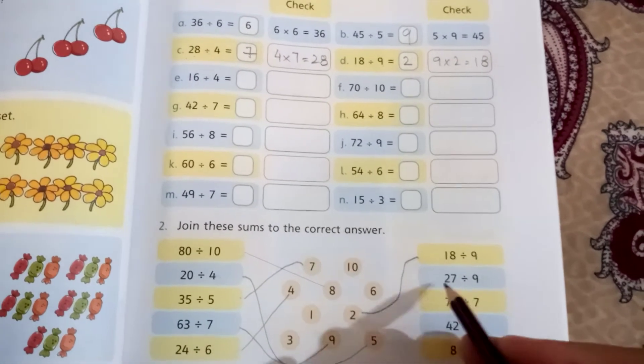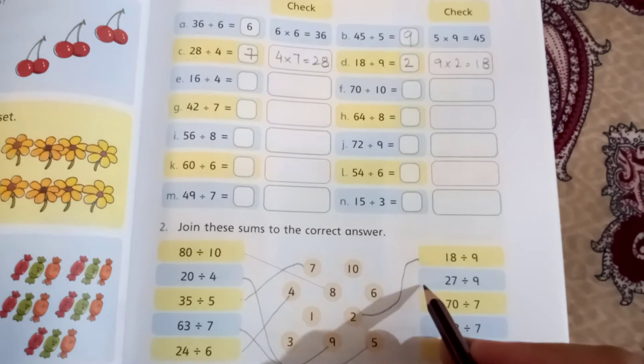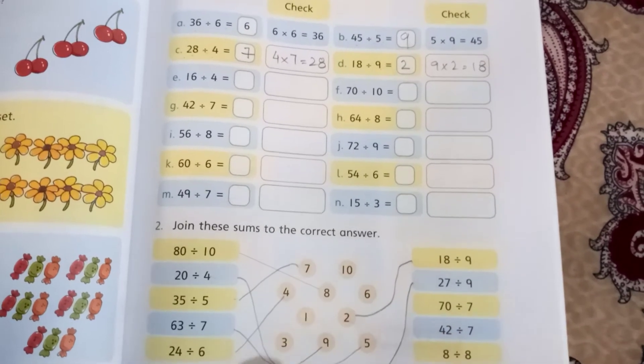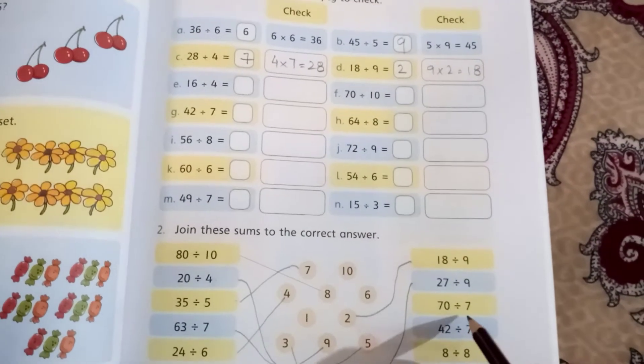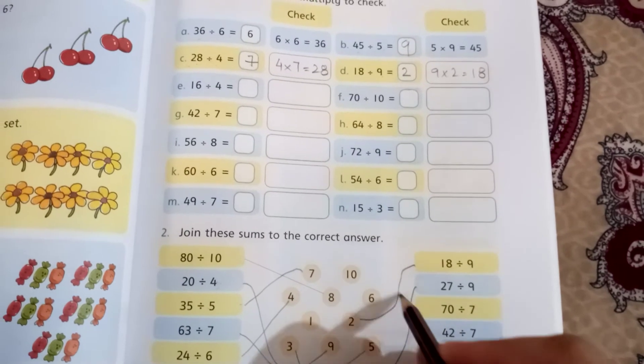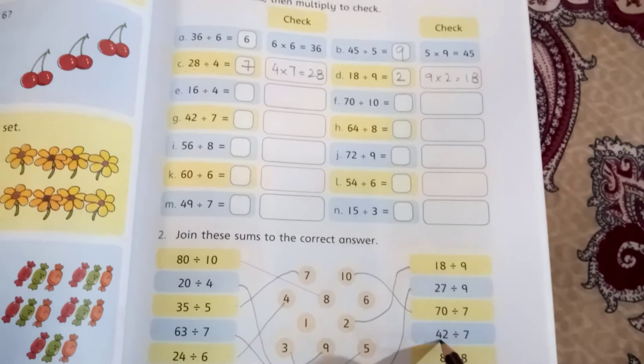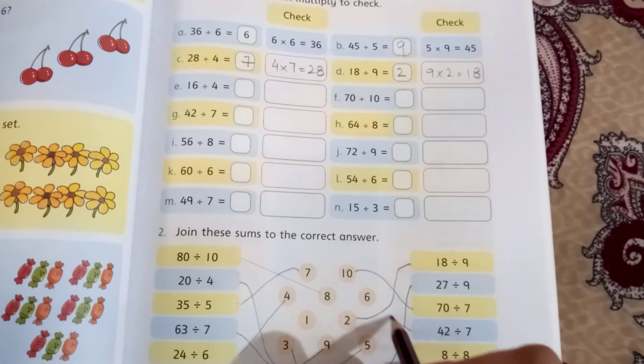3 nines are 27, that's a match. 7 tens are 70, that's a match. 7 sixes are 42, 6 is a match. 8 ones are 8.